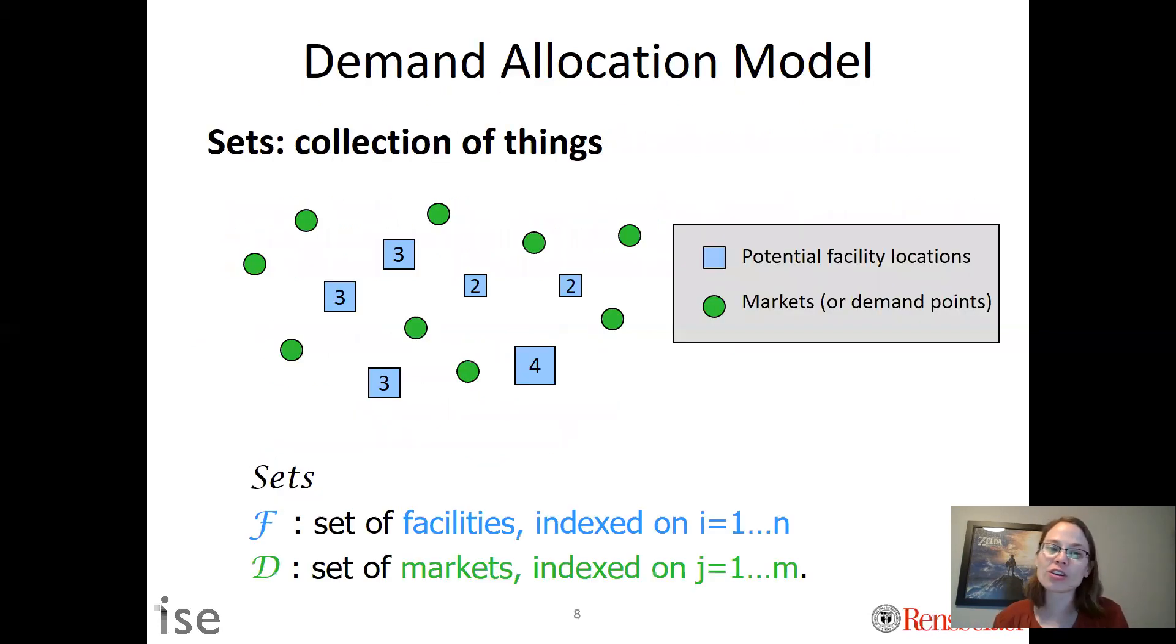Let's get started with the sets. As a reminder, a set is just a collection of things. So as an example, the green dots are the market or the demand, and the blue squares are potential facility locations with numbers inside representing some capacity. I'm going to define big F as the set of facilities indexed on little i.